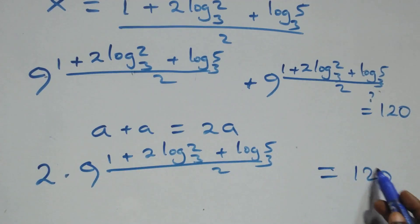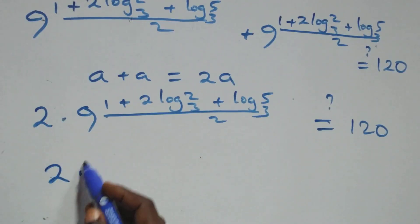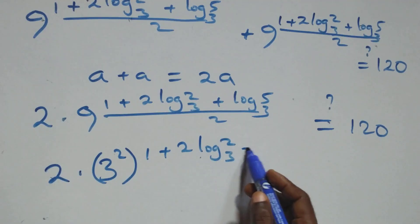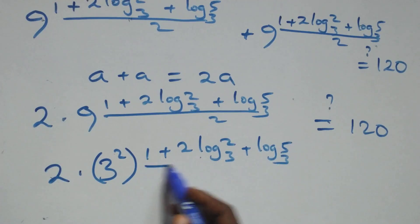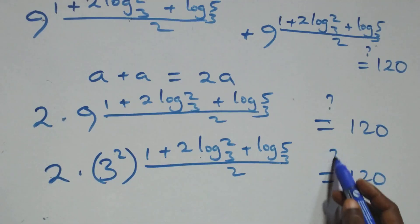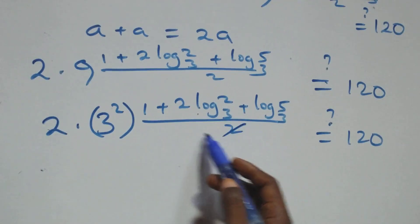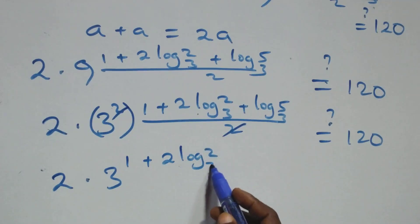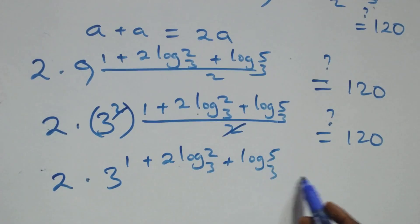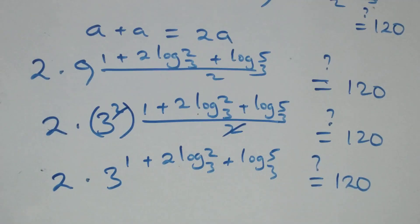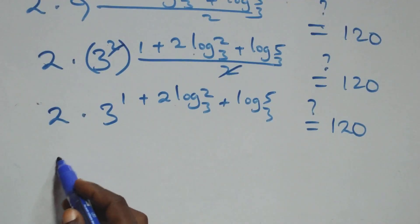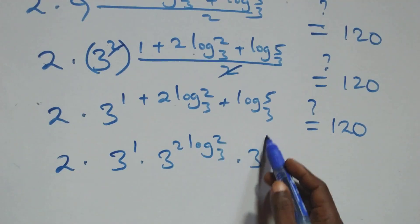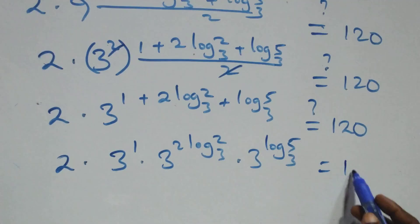Now, 9 can be written as 3 squared. So we have 2 times (3²) raised to the power (1 plus 2 log₃2 plus log₃5) all over 2, which equals 120. The power of 2 in the base and the denominator 2 in the exponent multiply and cancel, giving 2 times 3 raised to the power (1 plus 2 log₃2 plus log₃5), which should equal 120.